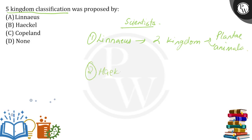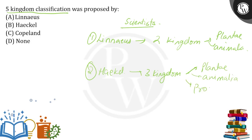Haeckel proposed three kingdom classification. This involved Plantae and Animalia, and one more — Protista. Then came Herbert Copeland.